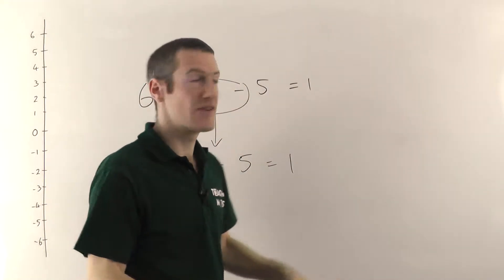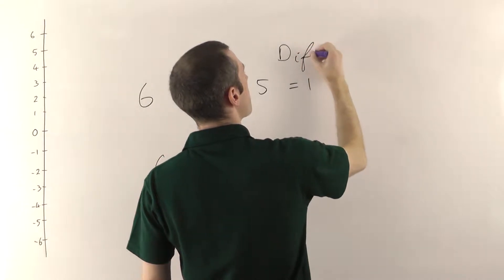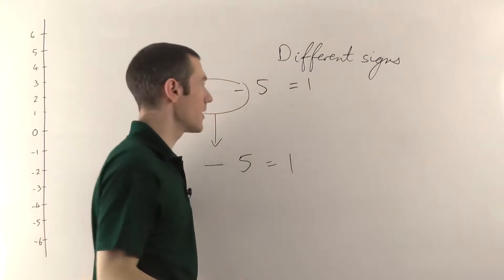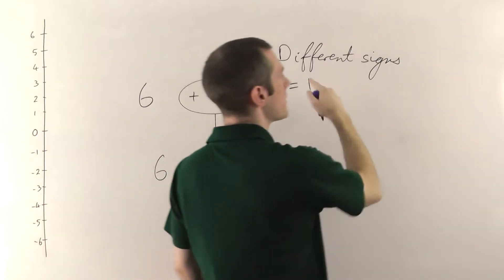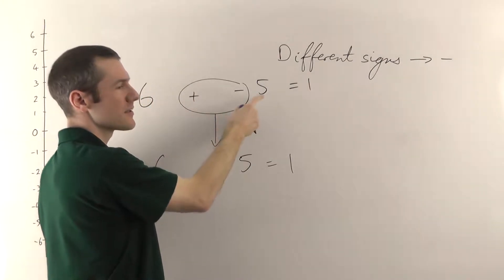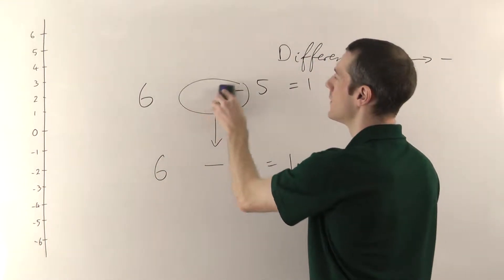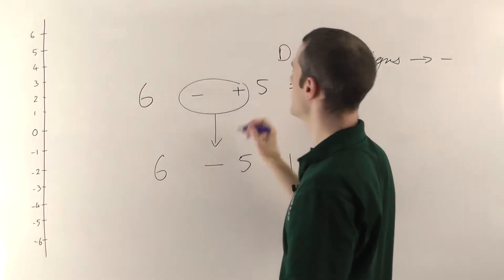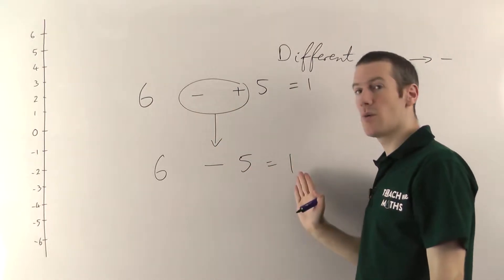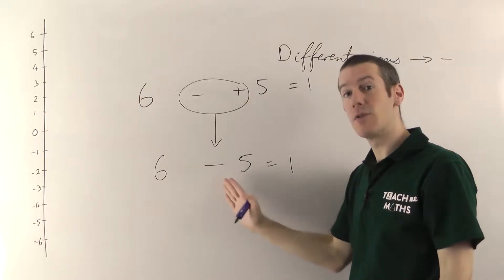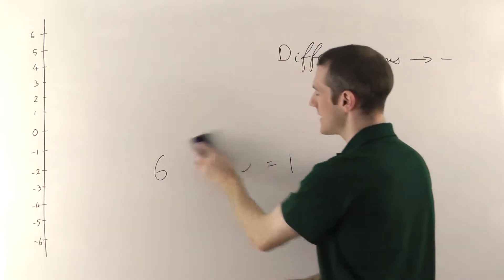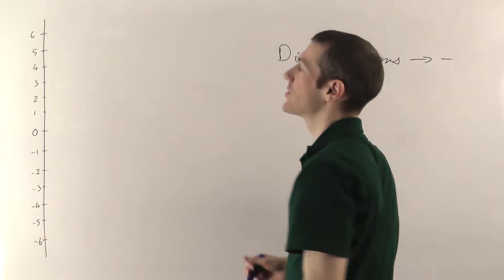This is one of our key rules for negative numbers: if you have two different signs next to each other with nothing in between, you can combine them and they always become a minus sign. Whether it's adding a minus five or subtracting a positive five, it doesn't make any difference — you still get one. They both combine to give you a minus sign, and that always works.